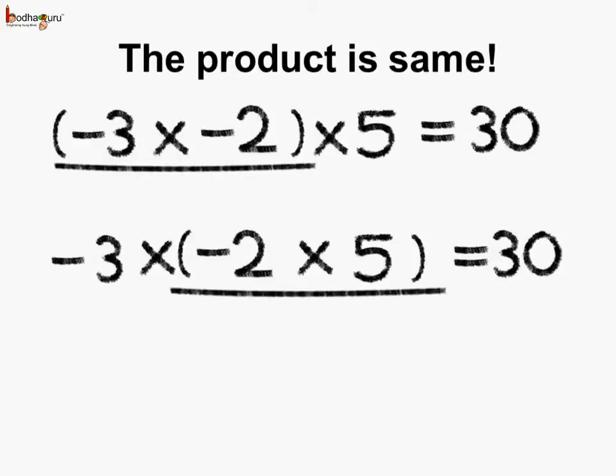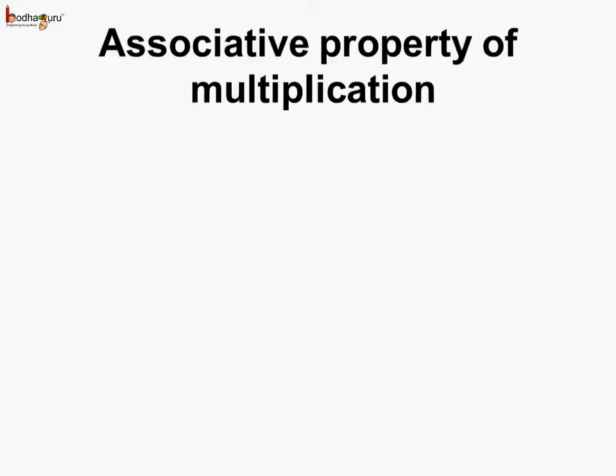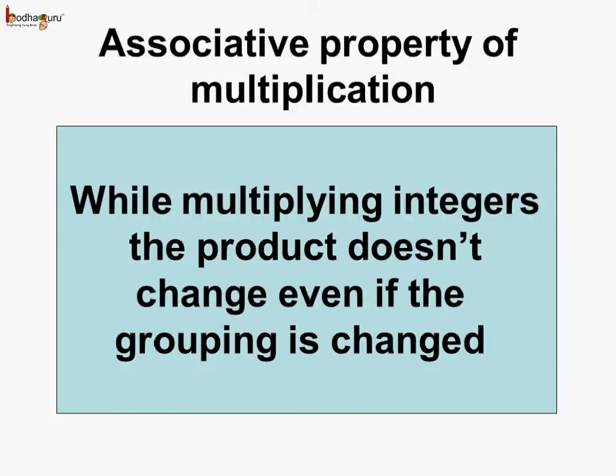What do we see? Even when we change the grouping, the answer is the same — 30 in all three cases. Whether we grouped minus 3 and minus 2, or minus 2 and 5, or 5 and minus 3, the product was always 30. This means the associative property of multiplication holds true: while multiplying integers, the product doesn't change even if the grouping is changed.